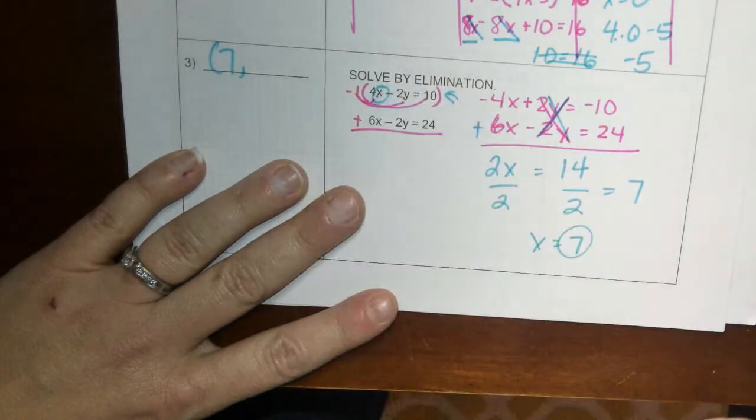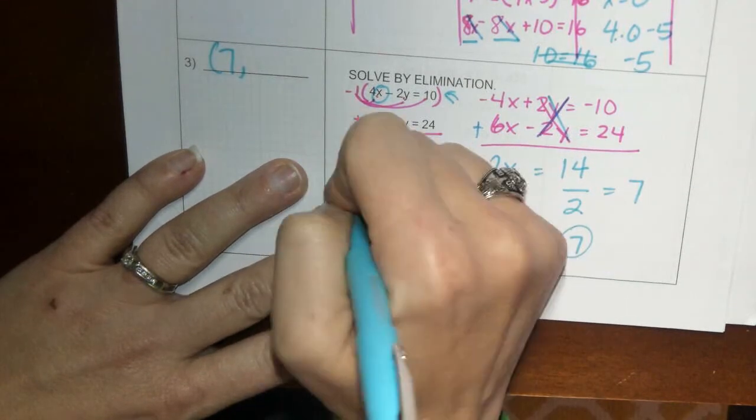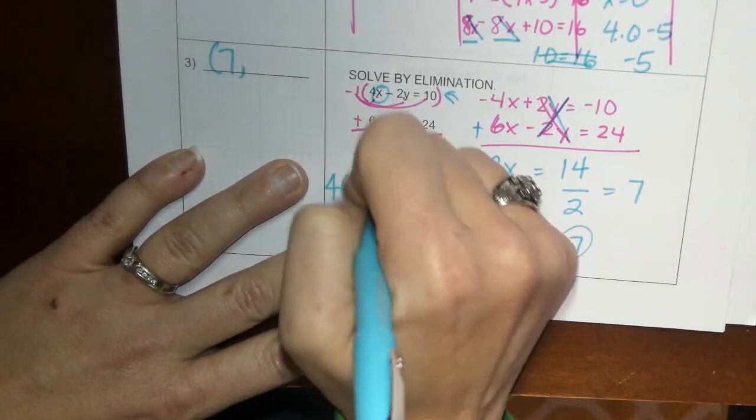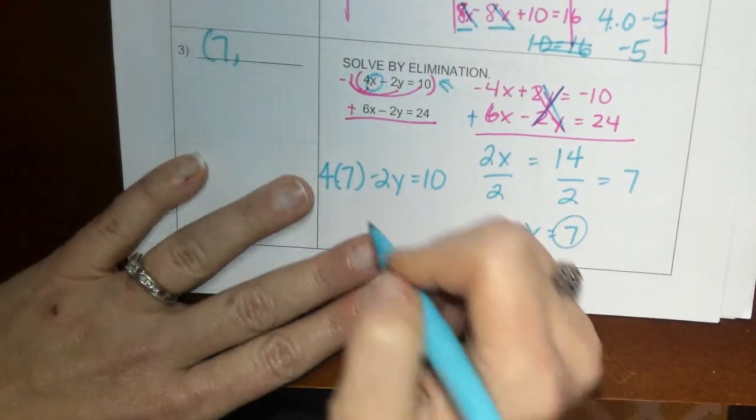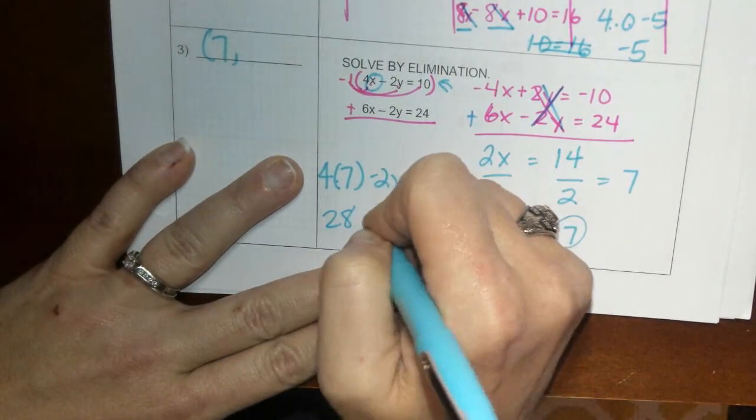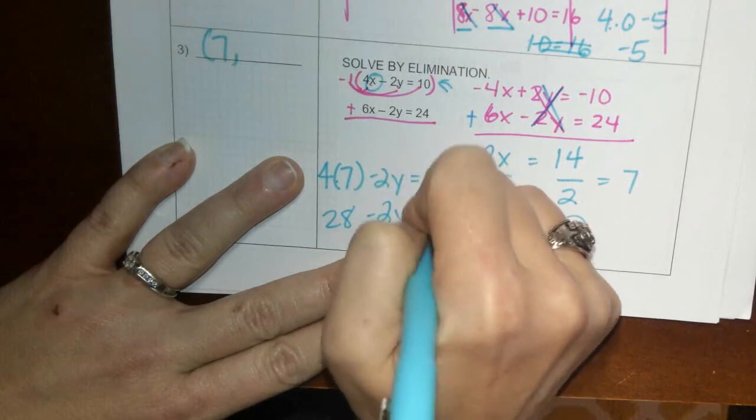So then we're going to plug in 7 back into either of these equations. I'll just do it in the top one for the x, so 4 times 7 minus 2y equals 10. You get 28 minus 2y equals 10.